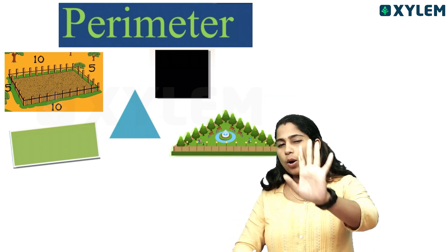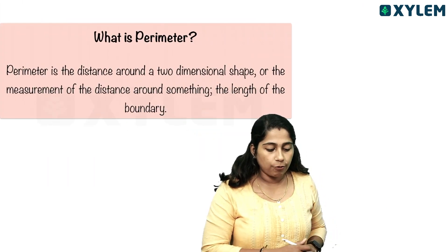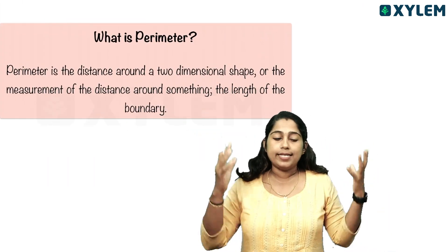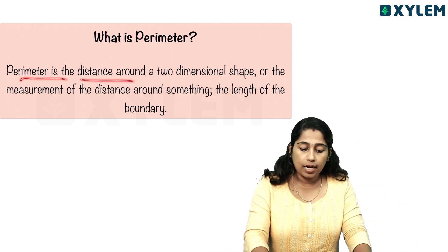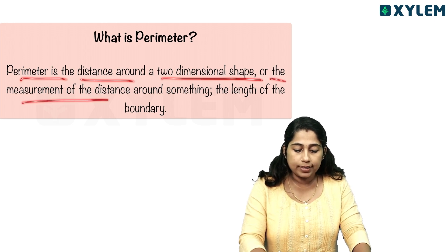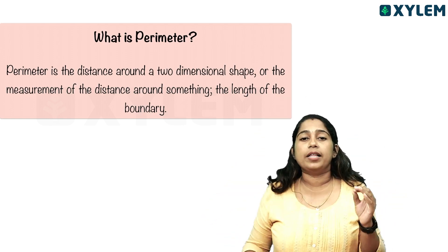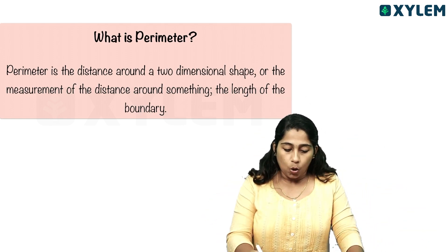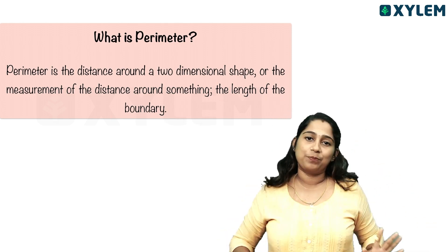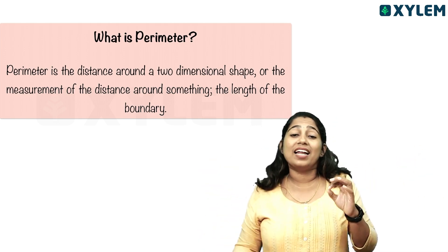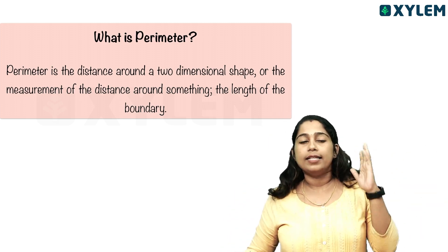This is easy and clear. What is perimeter? Perimeter is the distance around a two-dimensional shape, or the measurement of the distance around something. That is the perimeter.